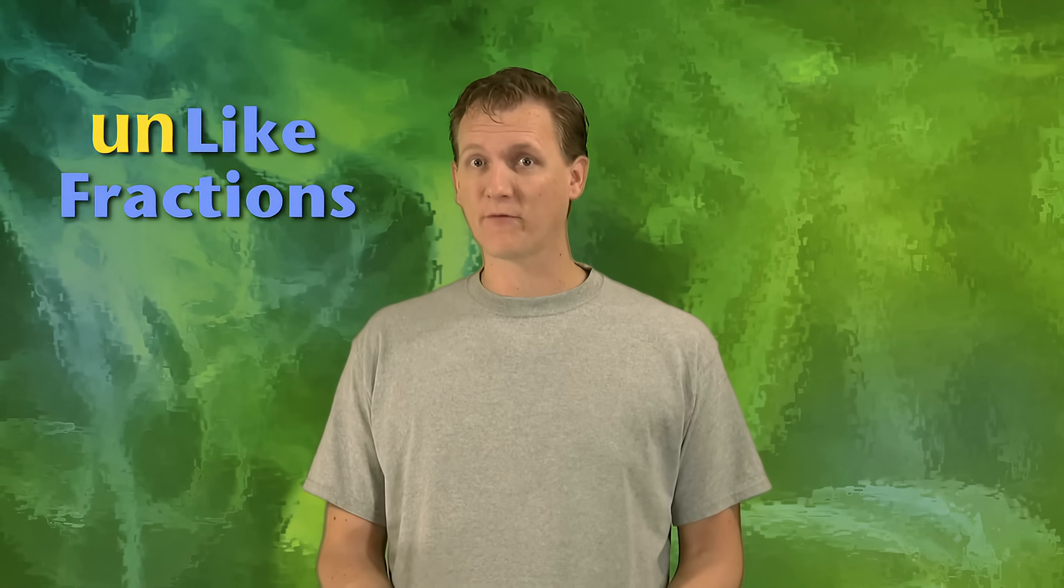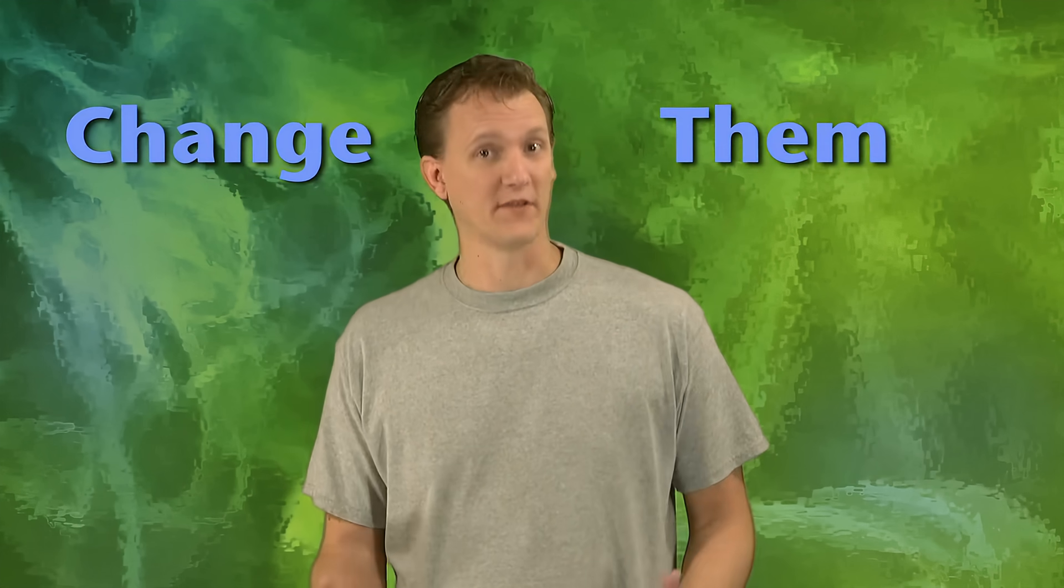But what happens if you want to add two unlike fractions? What do you do if you have fractions with different bottom numbers? Unfortunately, the only way we can add unlike fractions without doing the division first is to change them so that they do have the same bottom numbers. In other words, we need to change our unlike fractions into like fractions so we can just use our trick.